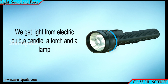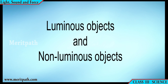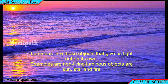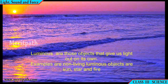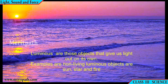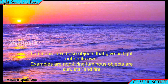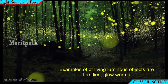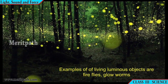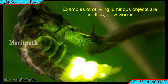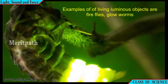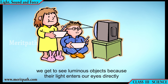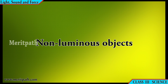Luminous and non-luminous objects: luminous objects are those that give out light on their own. Examples of non-living luminous objects are the Sun, the stars, and fire. Examples of living luminous objects are fireflies and glowworms. We get to see luminous objects because their light enters our eyes directly.